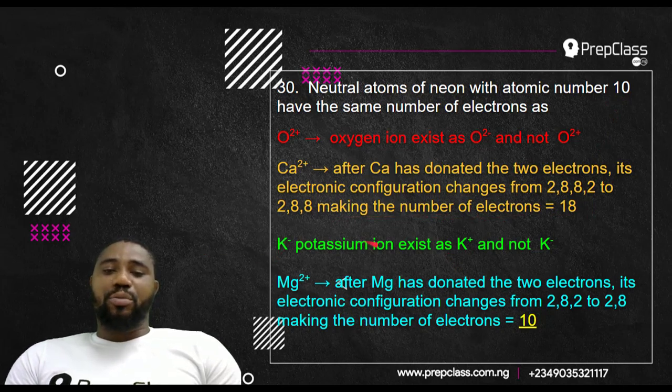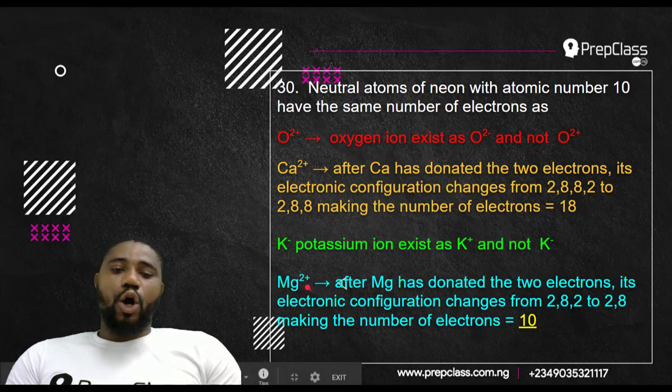Option C, K-. There's nothing like K-. Potassium ion exists as K+ and not K-. So this option C is useless.